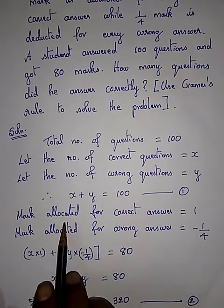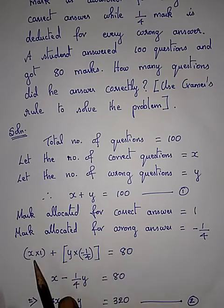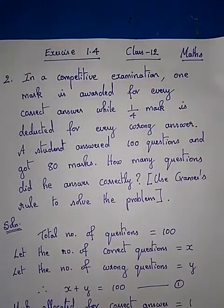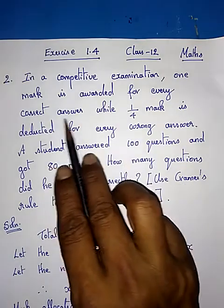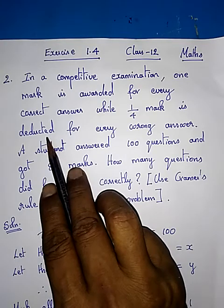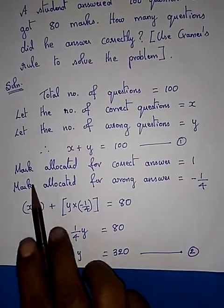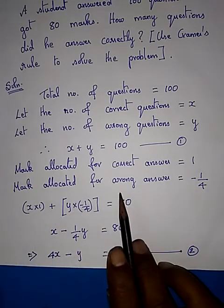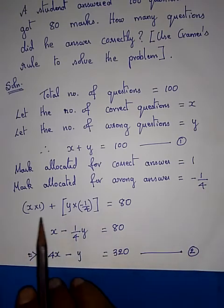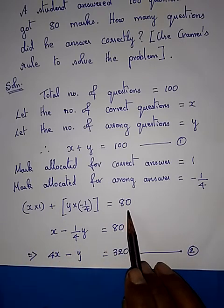The mark allocated for every correct answer is 1, and for every wrong answer the mark allocated is minus one-quarter. Put together, he has got 80 marks — he has answered both correct and wrong answers, but altogether he has got only 80 marks.